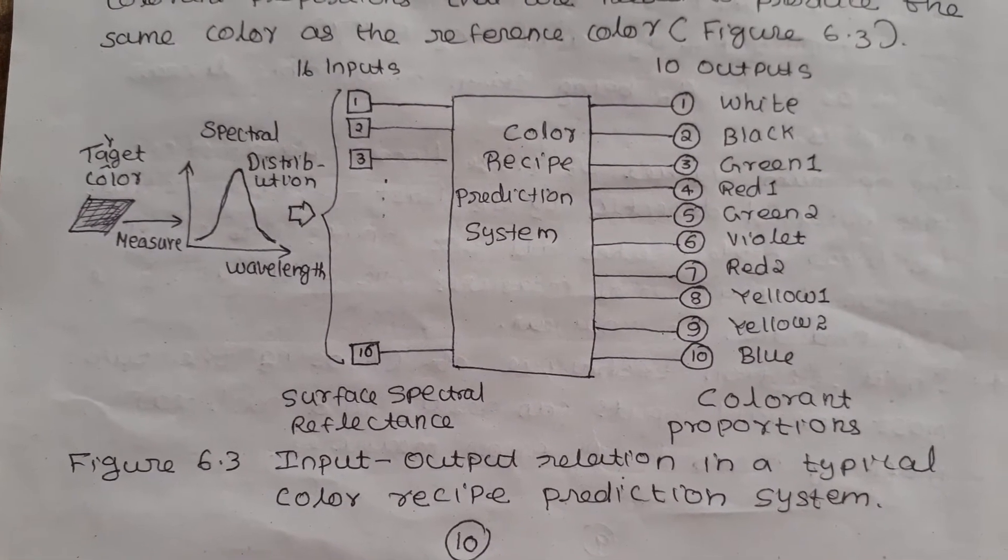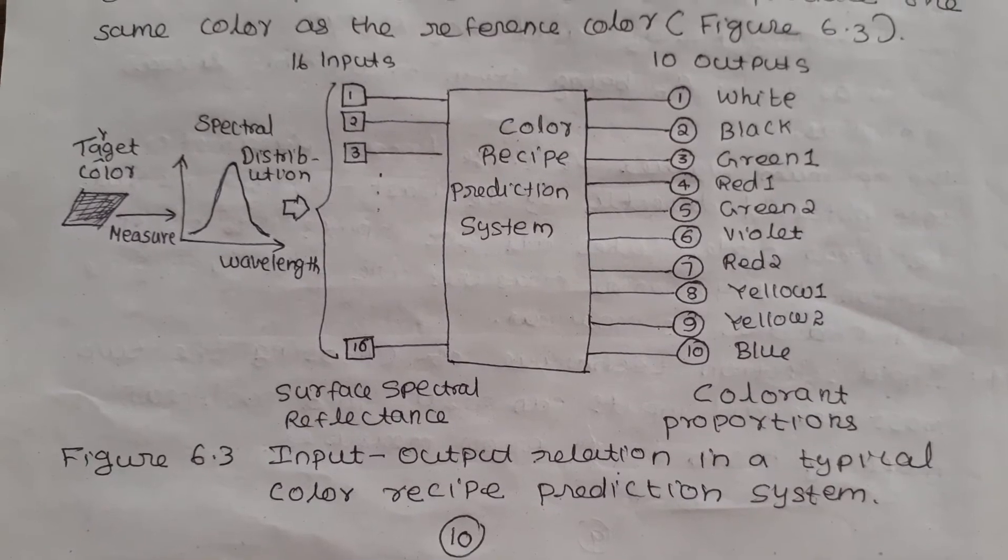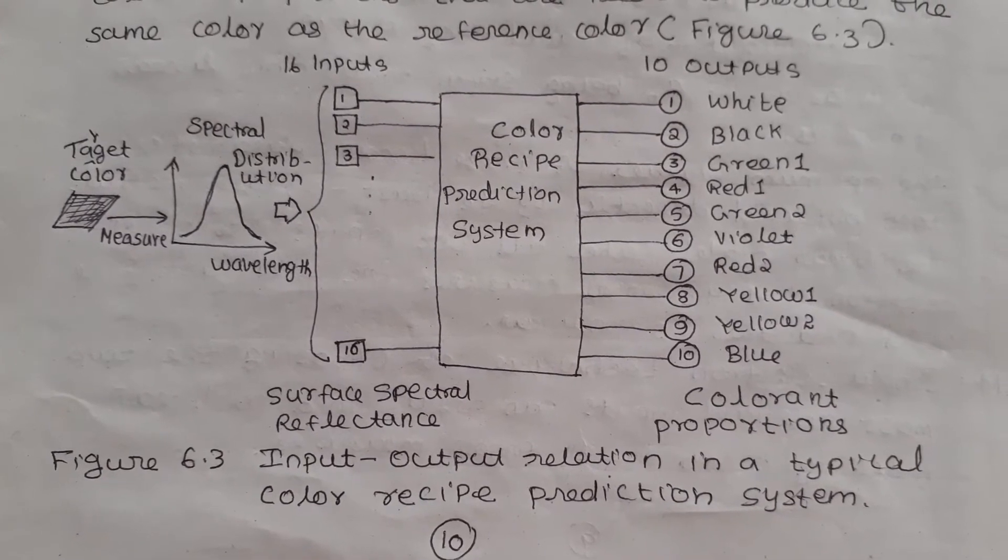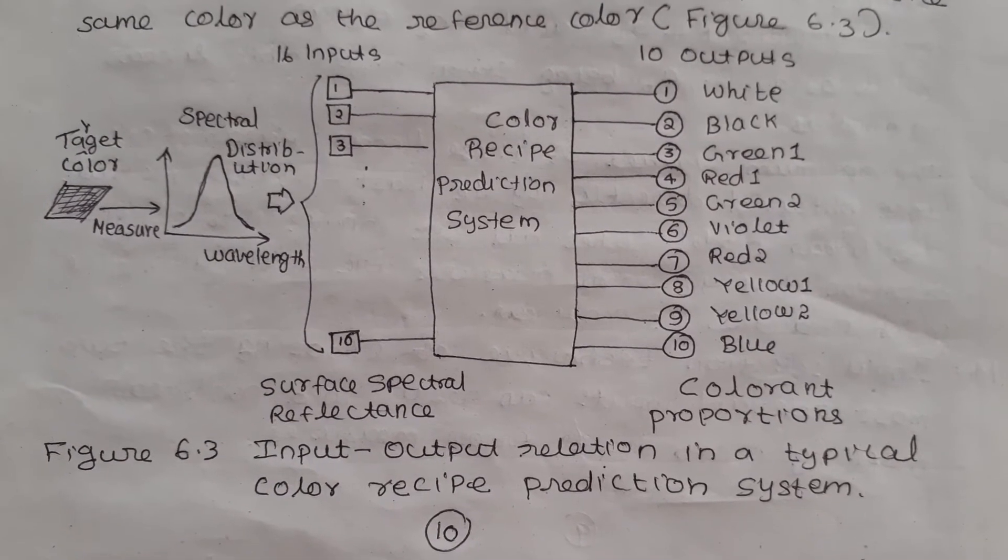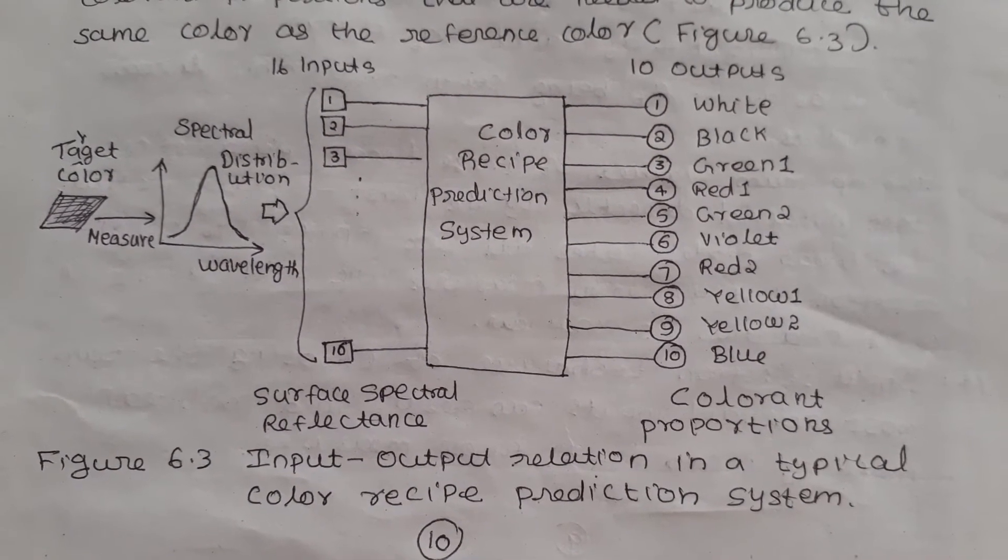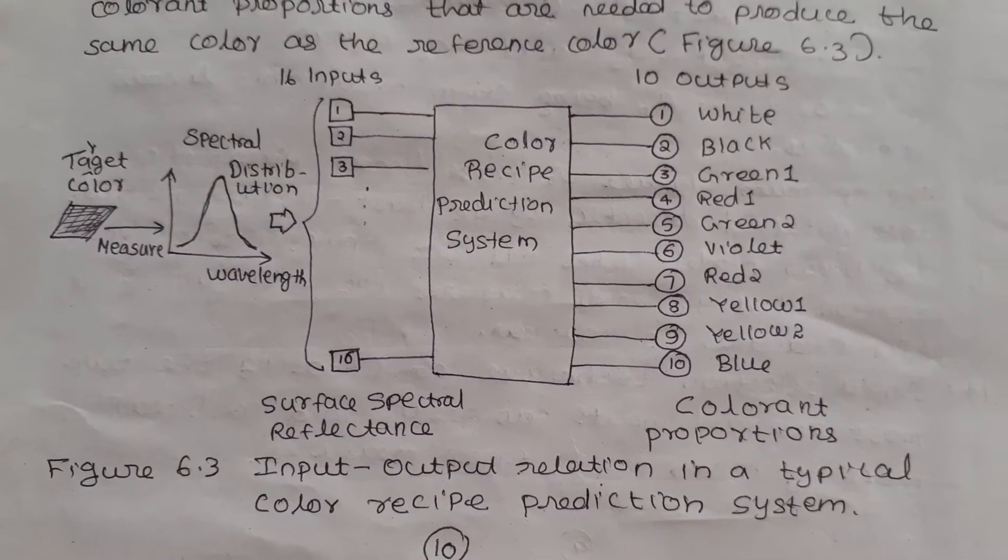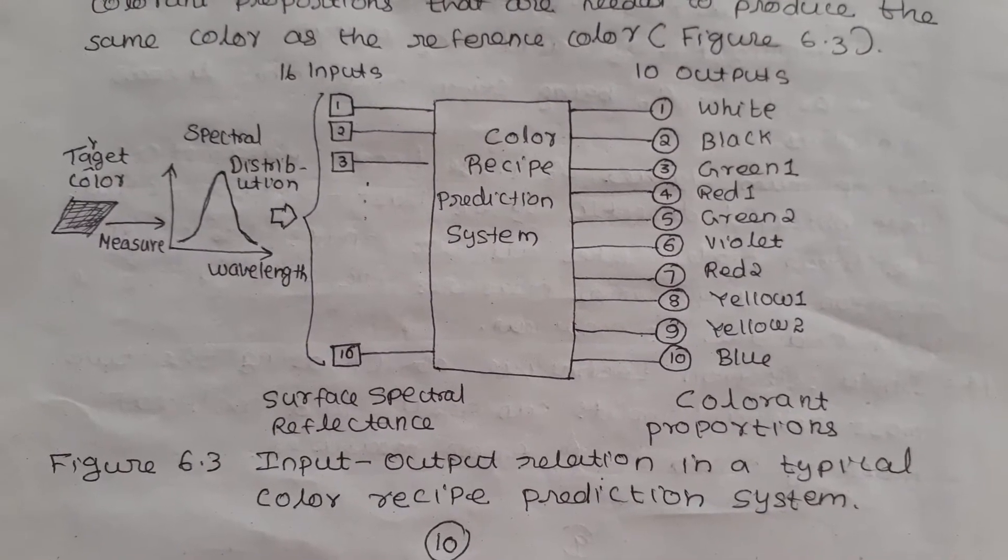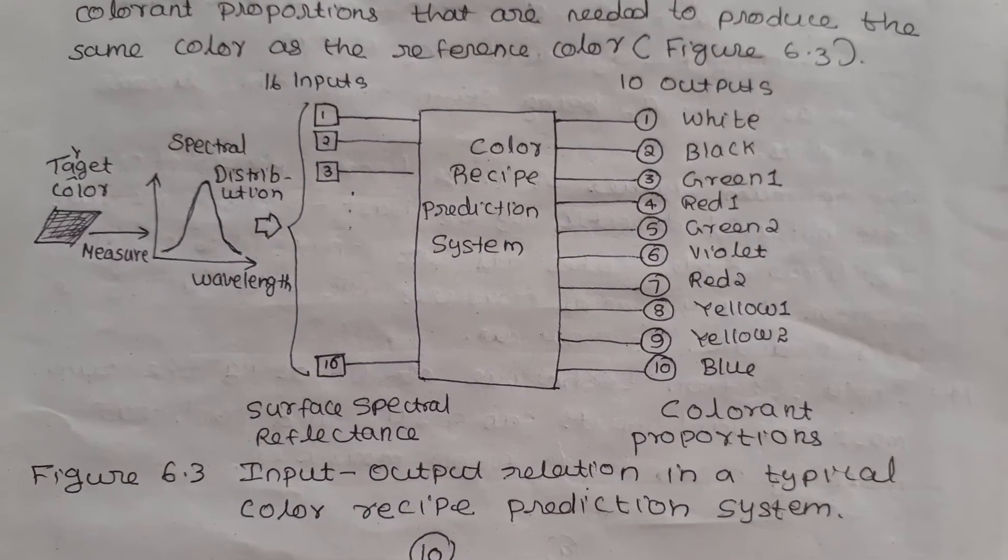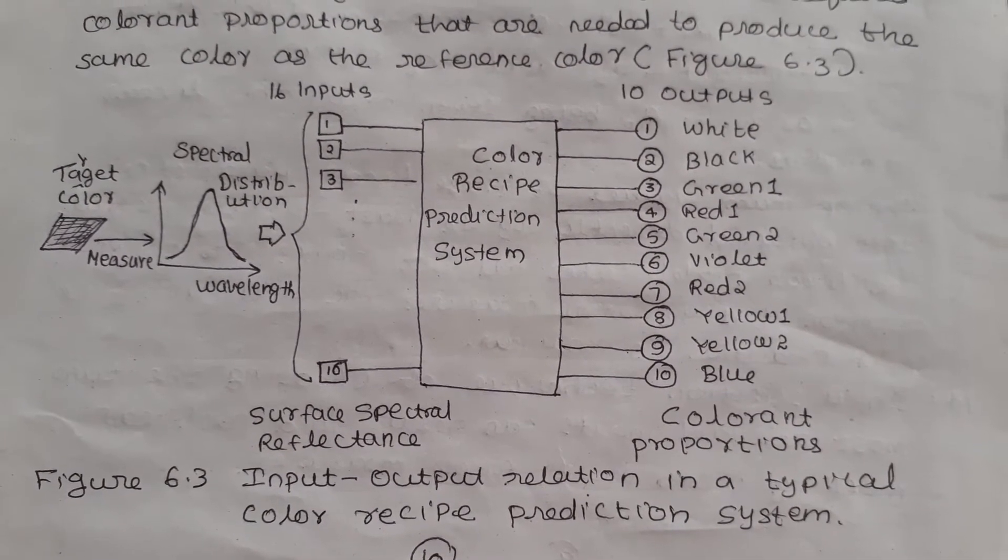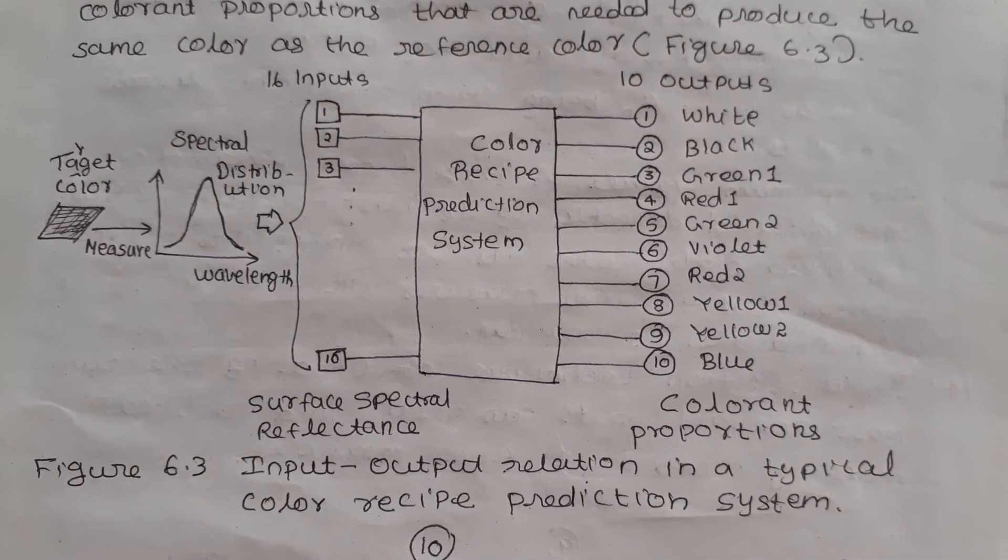When we pick 16 values x1, x2, etc., x16 from the surface spectral reflectance curve of a given target color, we have the following 16 fuzzy rules: Rule 1: if x1 at 400 nanometer is A1, then use rule C1. Rule 2: if x2 at 420 nanometer is A2, then use rule C2, and so on to rule 16.